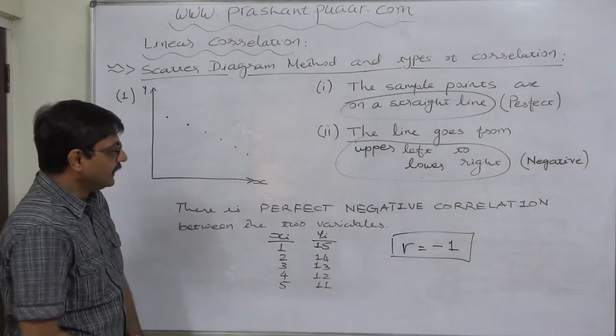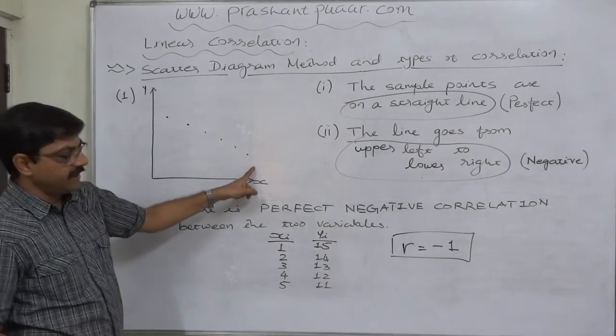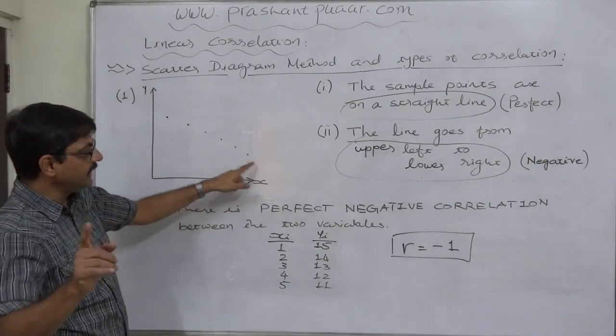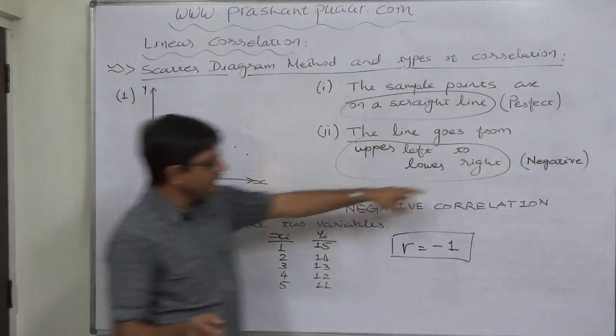And the line goes from upper left to lower right. The direction is important. The direction upper left to lower right shows negativity.